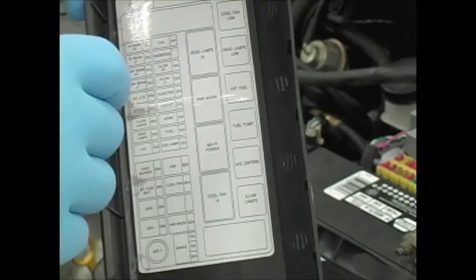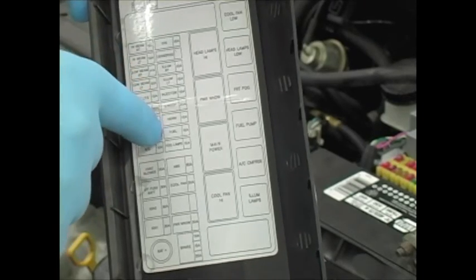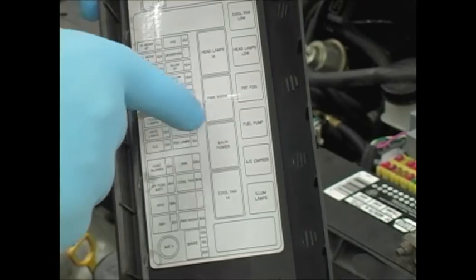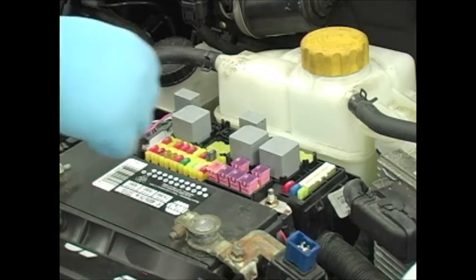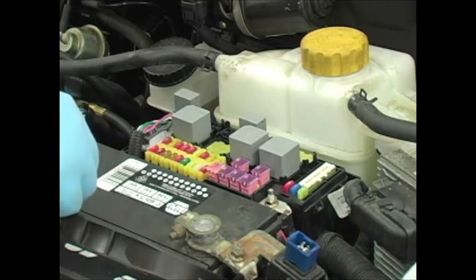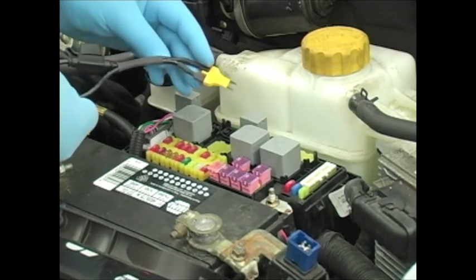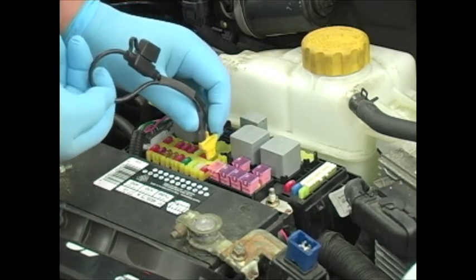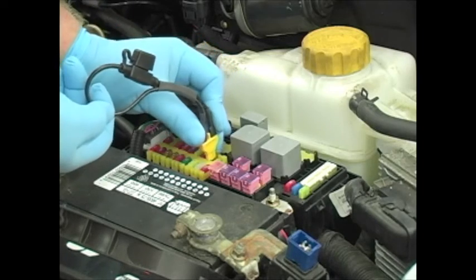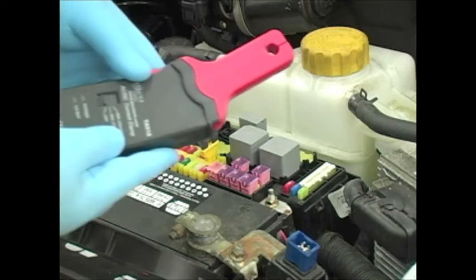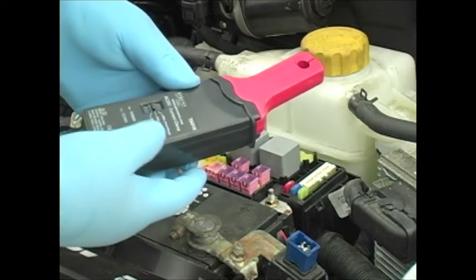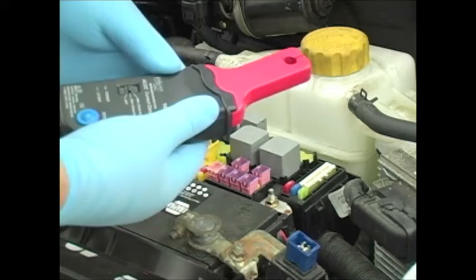The next step is to access the fuse box and from there, identify the fuel pump fuse and or the fuel pump relay. With the proper fuse located, I'm going to remove the fuse and install a bypass or fuse jumper wire. This gives me a place to attach my low amp clamp and allows me to monitor fuel pump current.